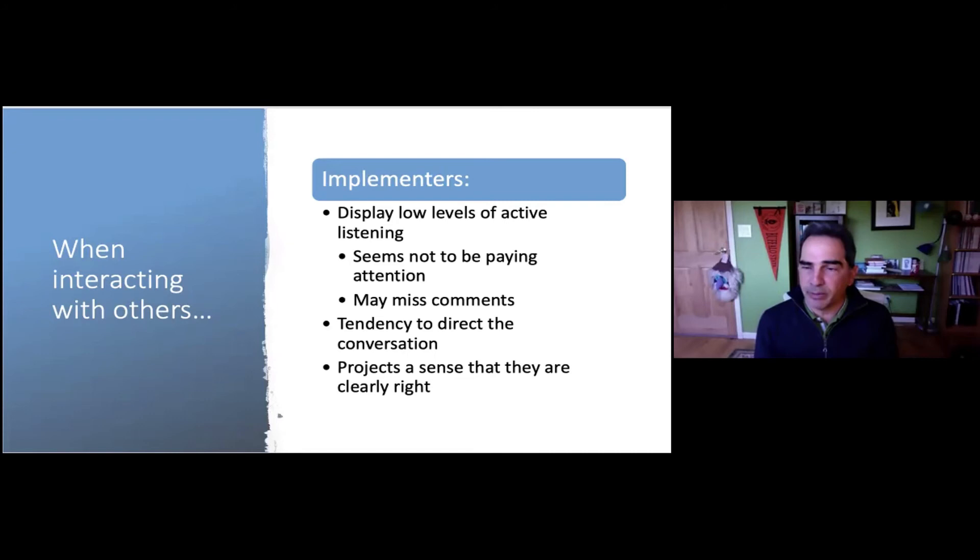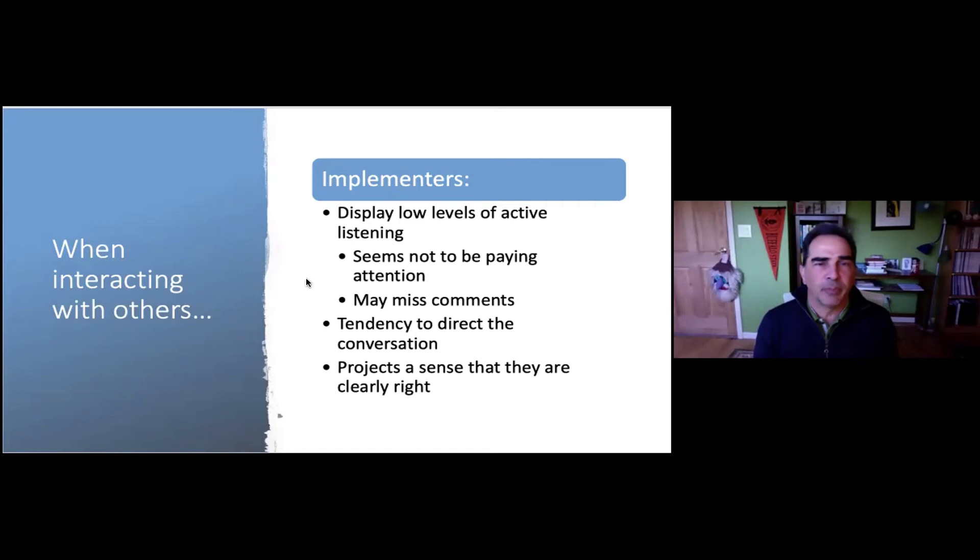Implementers have a tendency to direct the conversation and could project a sense that they are clearly right — just agree with me, get on board, and let's move forward. This begins to help us understand how each preference shows up in a social setting. What are your questions and reactions? What's the value? What new insights do you get by thinking about how these four preferences show up differently with others?